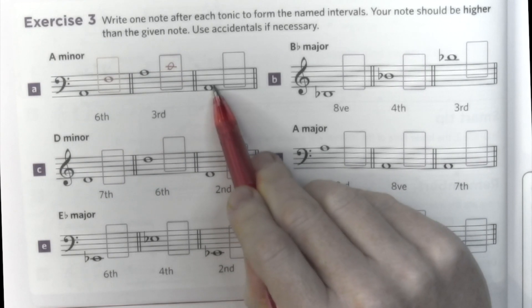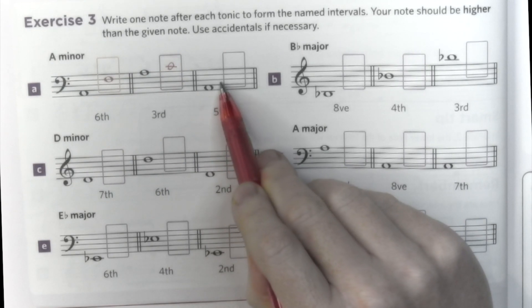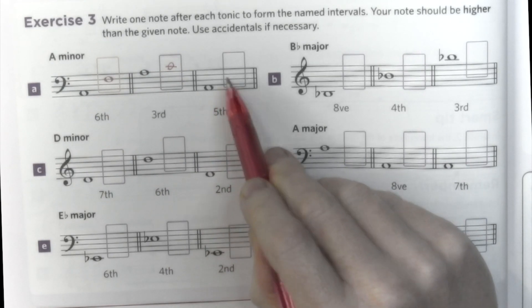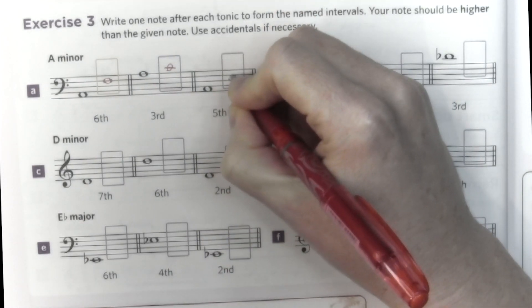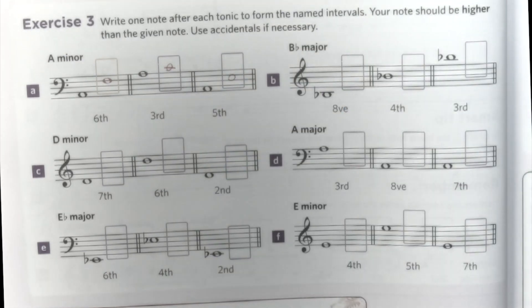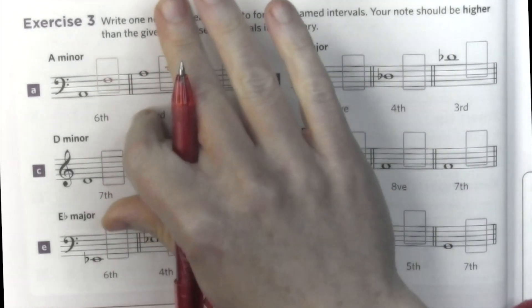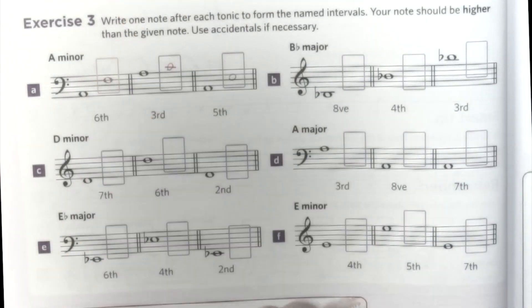A fifth is one, two, three, four, five. La, Mi. La, Si, Do, Re, Mi — that's another way of doing it.